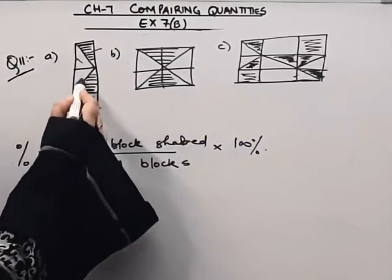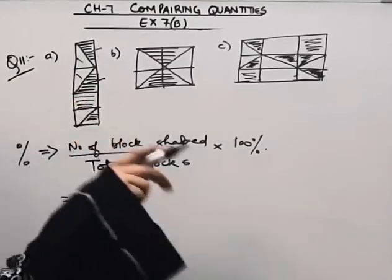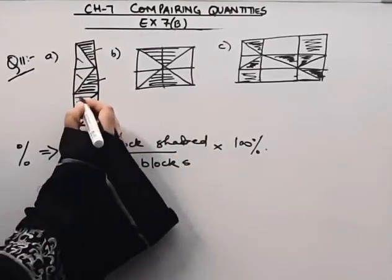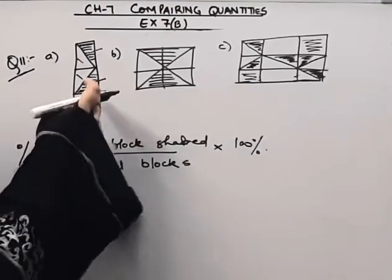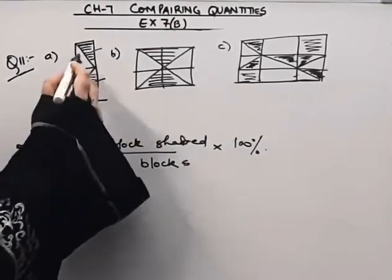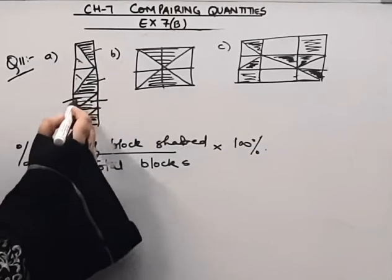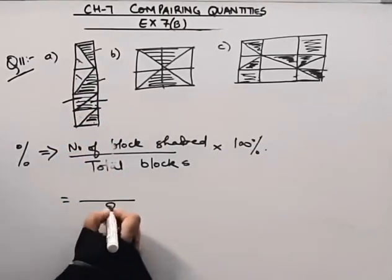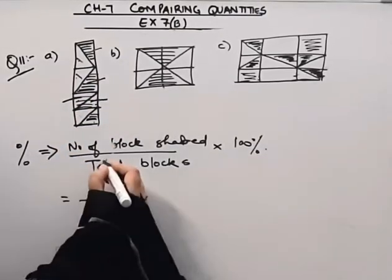This is 1, 2, 3, 4. These are again 2 blocks, so 2 blocks are the partition. 1, 2, 3, 4, 5, 6, 7, 8. That means there are 8 blocks in total.